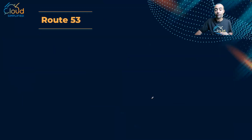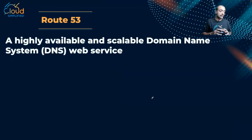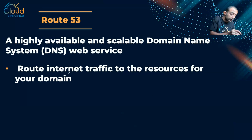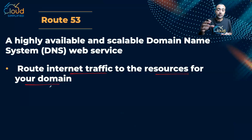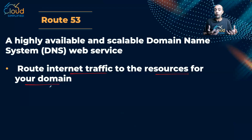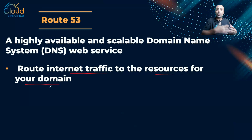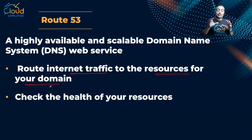Let's look at the characteristics of Route 53. It is a highly available and scalable DNS service from AWS, used to route internet traffic to the resources for your domain. For example, if I have my application across two regions, I can load balance between them — this is called global server load balancing. A request hits Route 53, and if I have two regions, it might reply back with one of the two IP addresses — perhaps the nearest region's IP address.